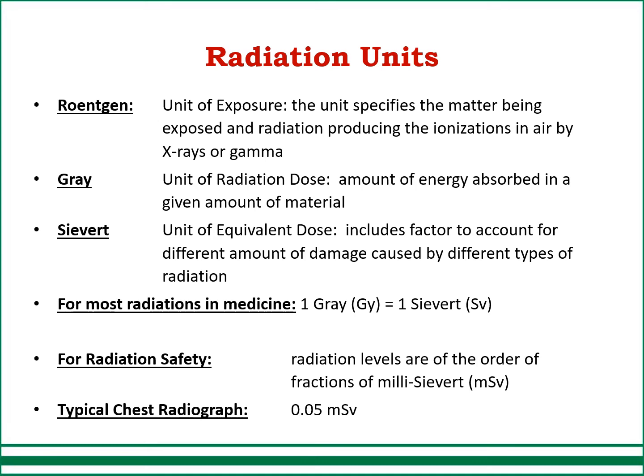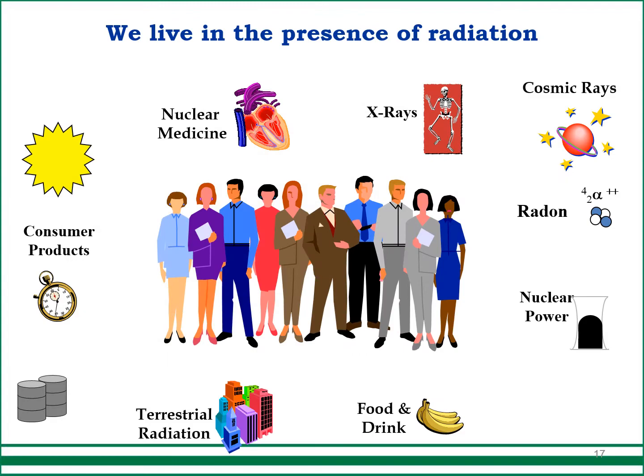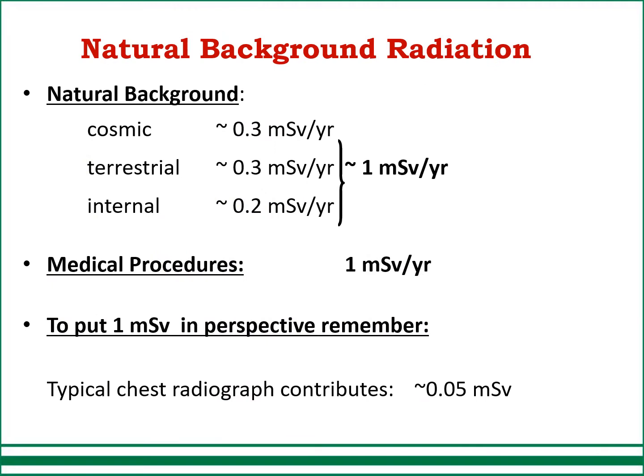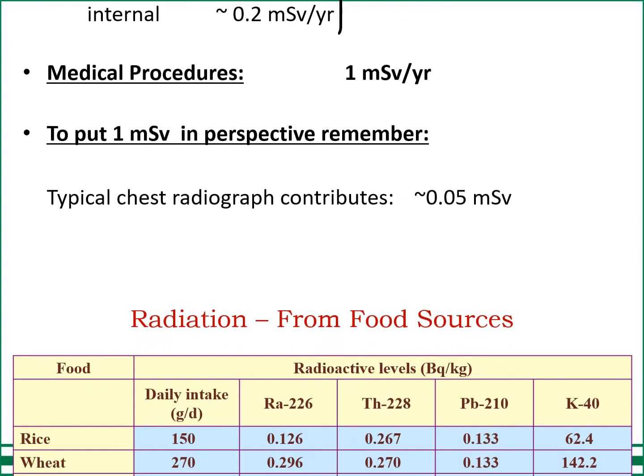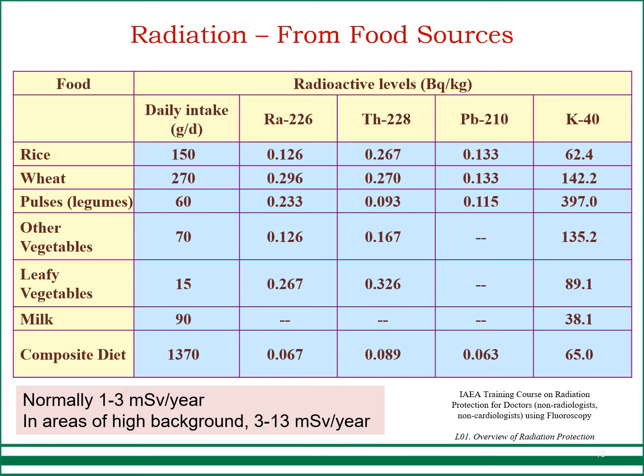We live in the presence of radiation every day. Natural background accounts for about 1 millisievert per year, and it varies around the globe. Medical procedures also contribute about 1 millisievert per year. To put 1 millisievert in perspective, a typical chest radiograph contributes 0.05 millisievert. Radiation is also found in food sources, as shown in the chart.